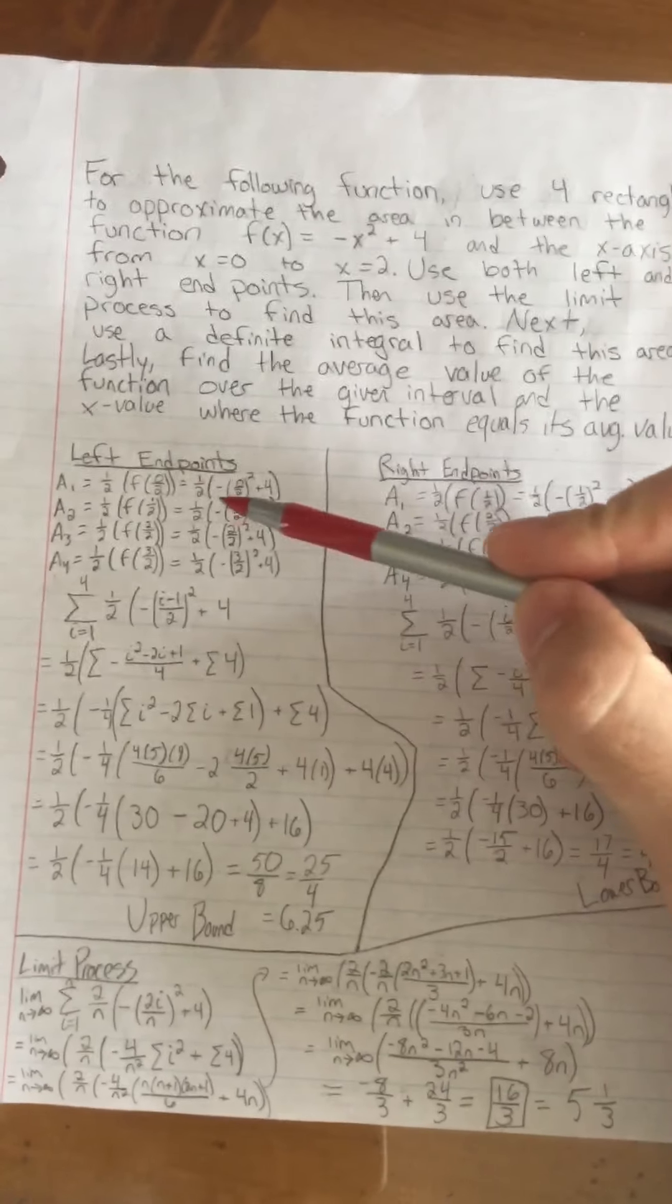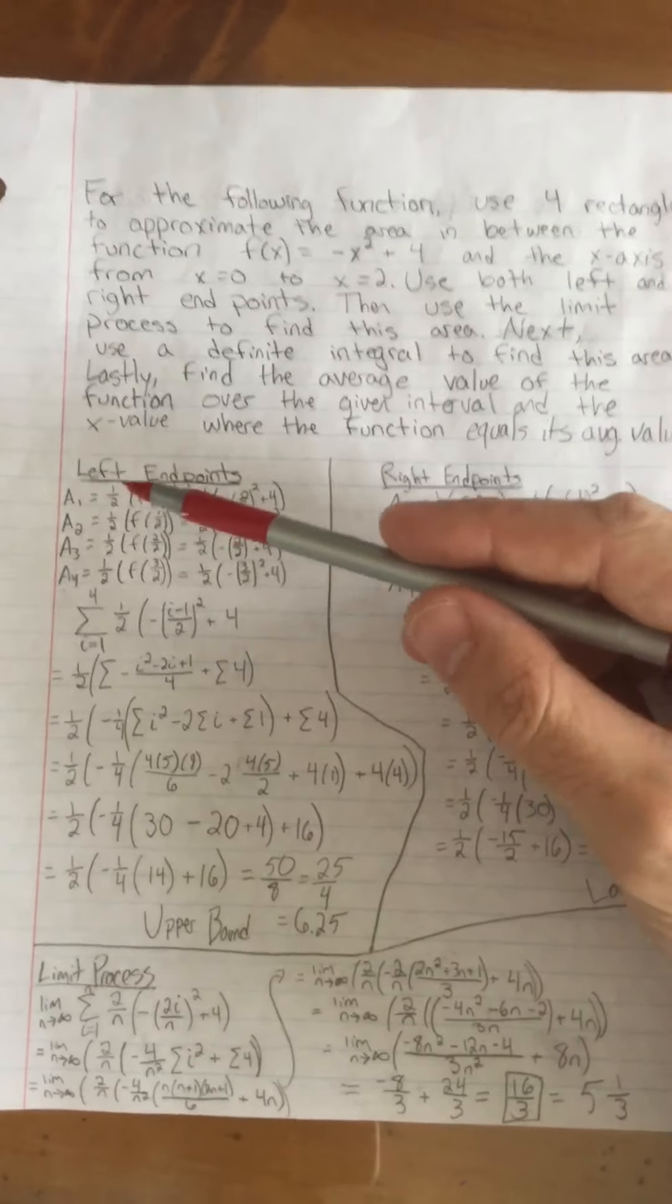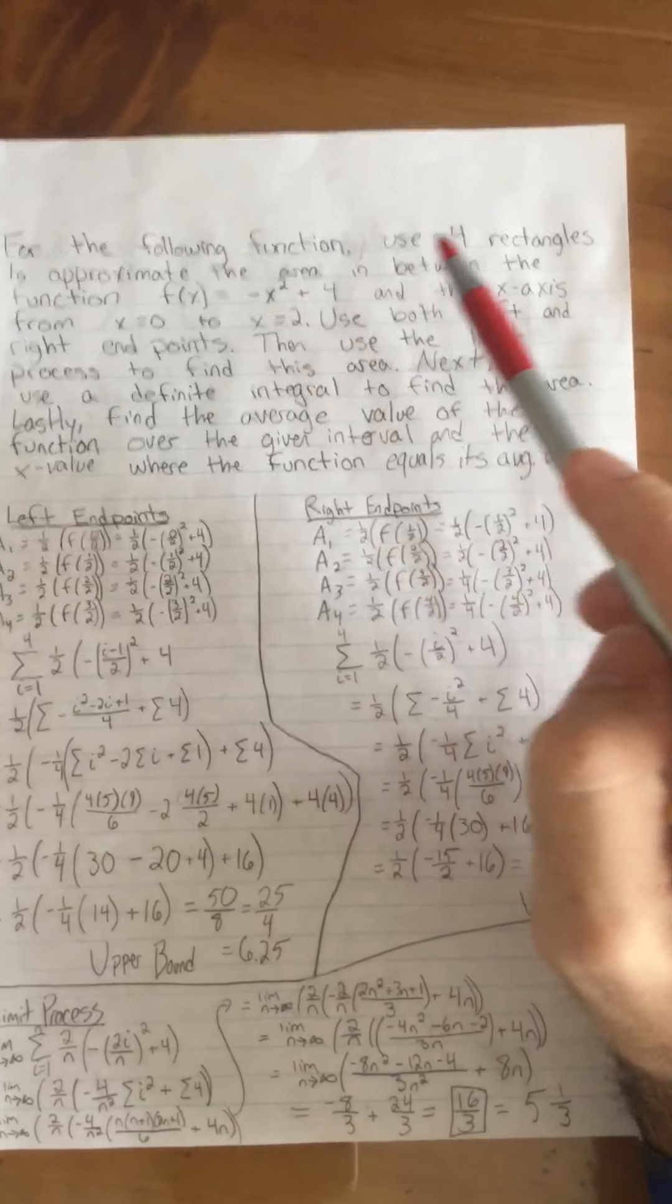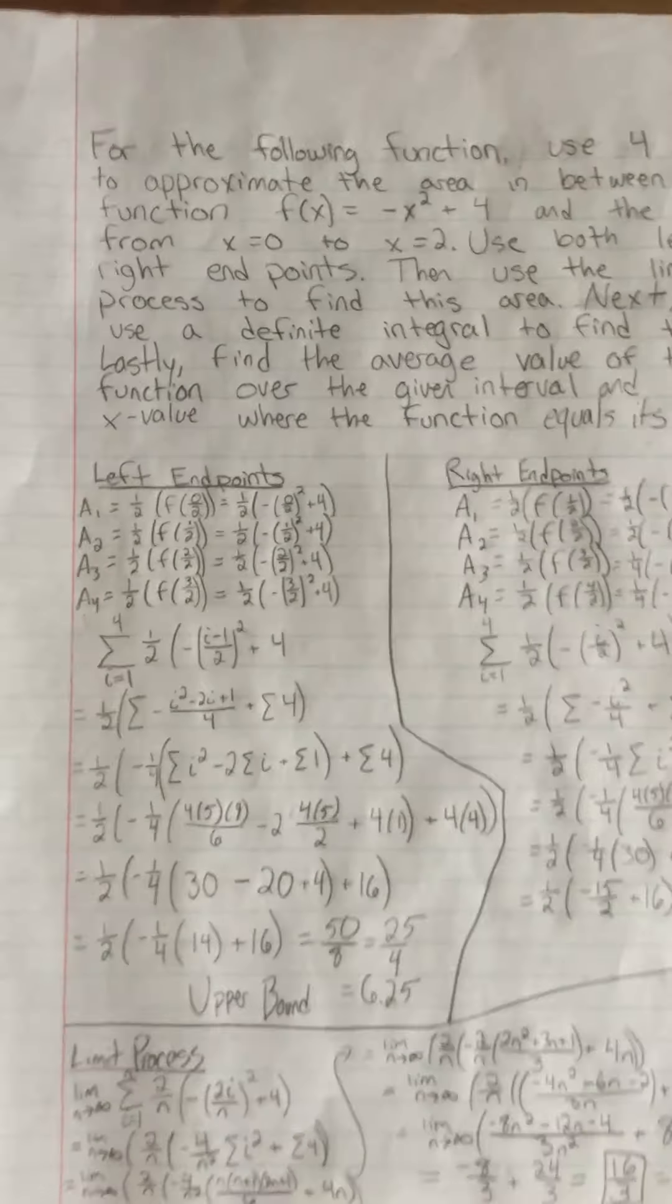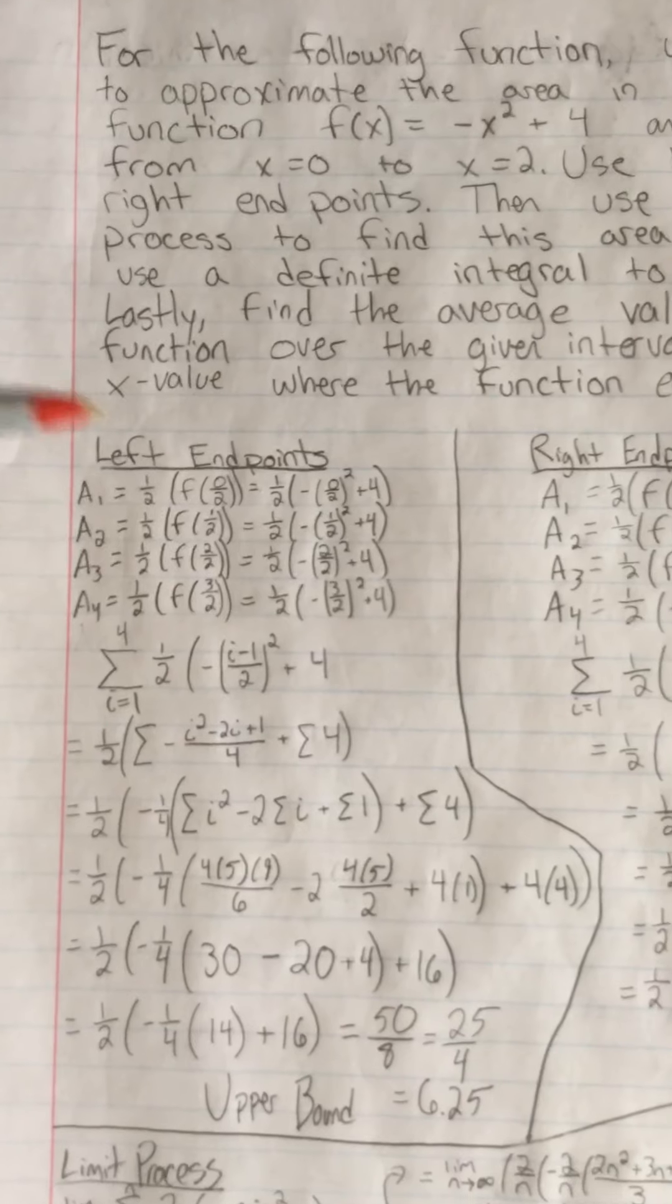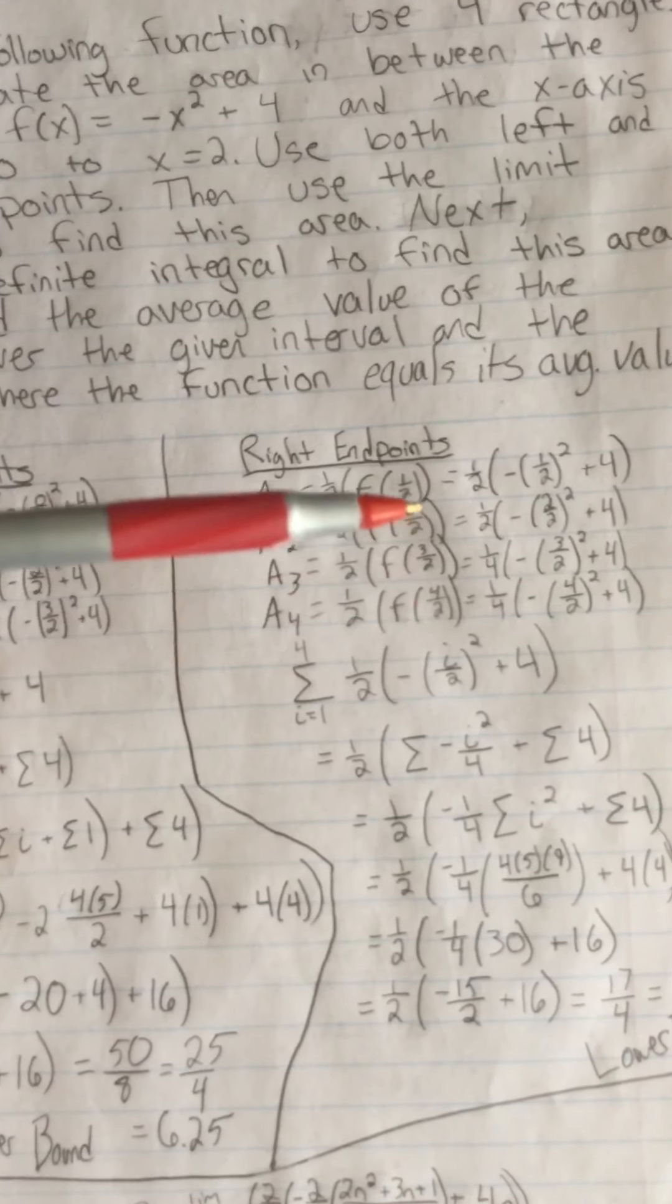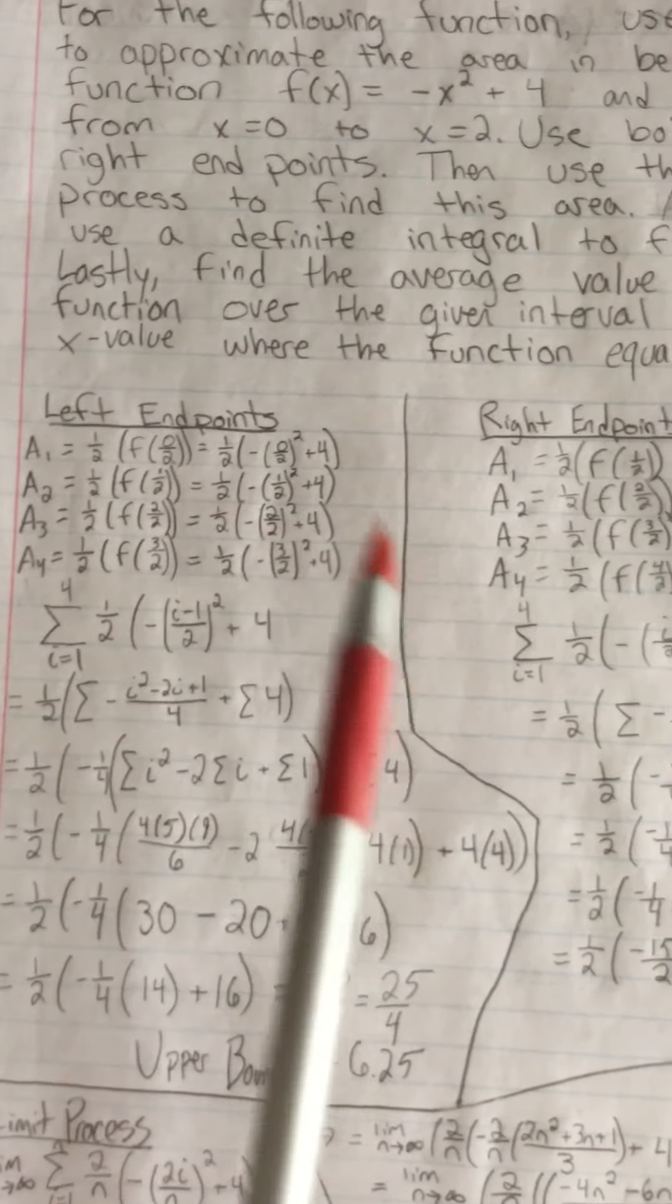Essentially what I did here for left endpoints, this is the width of each rectangle. So essentially what that is, is breaking up this length of two into four rectangles, two divided by four gives us one half. So that is the width of all of our rectangles. And then these f of zero over two, f of one over two, those are the heights of our rectangles. If we're using the left endpoint, that's why we have zero through three. When we go to use the right endpoints, it is one through four. And all I did here was I plugged in those values to get these things here and here.